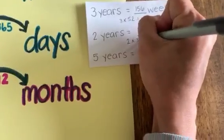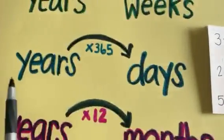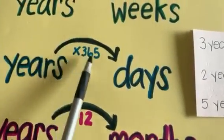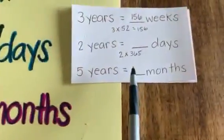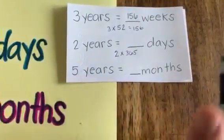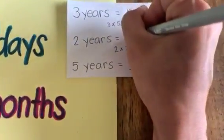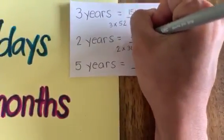I'm just following my arrow. Two times 365, that's going to give me the number of days. Two times 365 is 730.